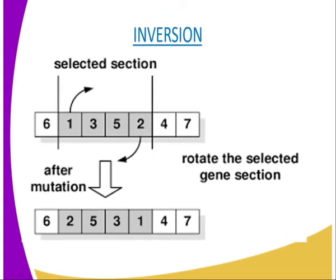We have our fourth type of mutation, which is known as inversion, whereby if a portion of the DNA strand rotates through 180 degrees, that portion is said to be inverted. Looking at our diagram, the original sequence 6, 1, 3, 5, 2, 4, 7 is inverted at 180 degrees, so the positions change — for example, 2 comes where 1 was, and 5 comes where 3 was, as shown in the diagram.